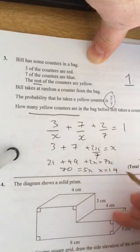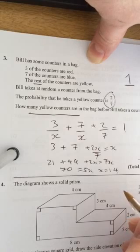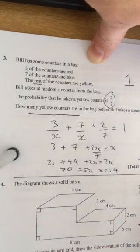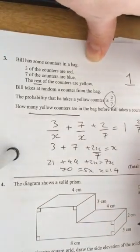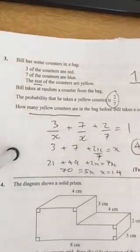So I know that x will equal 14. But that's not the answer that we're looking for. We now need to work out how many yellow counters there are. And if the total is 14, 2/7 times 14 means the answer would be 4. So thank you.